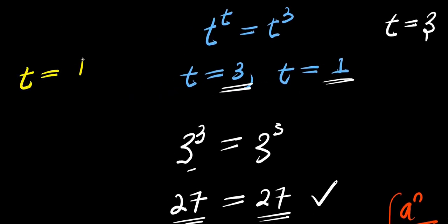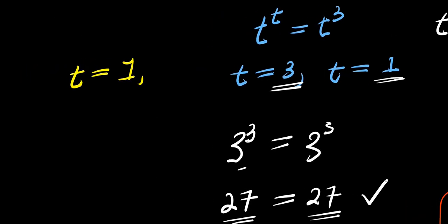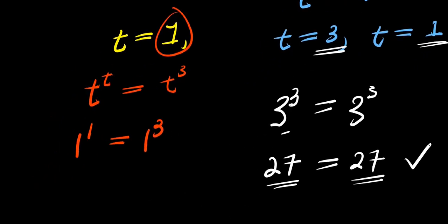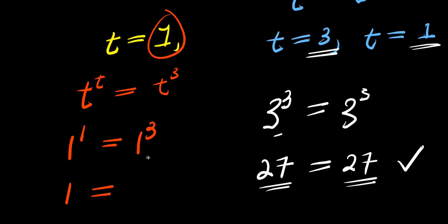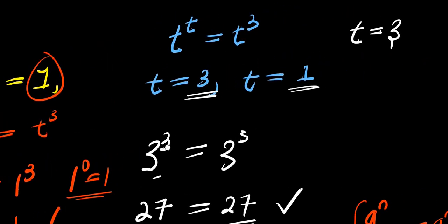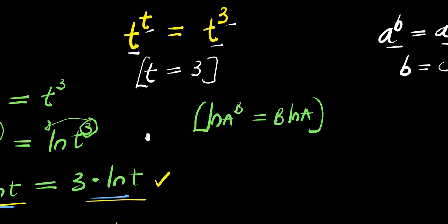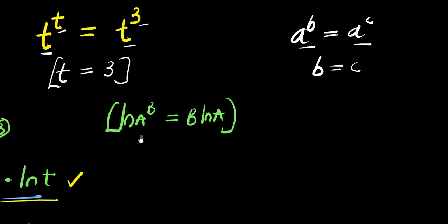Now considering t equals 1: t to the power t equals t to the power 3. Inserting 1: 1 to the power 1 equals 1 to the power 3. 1 to the power 1 is 1, and 1 to the power 3 is 1 — 1 raised to any power gives 1. Left-hand side equals right-hand side. Both solutions satisfy the equation. Those are the two methods to solve this exponential problem and find all values of t. Thank you and see you again.